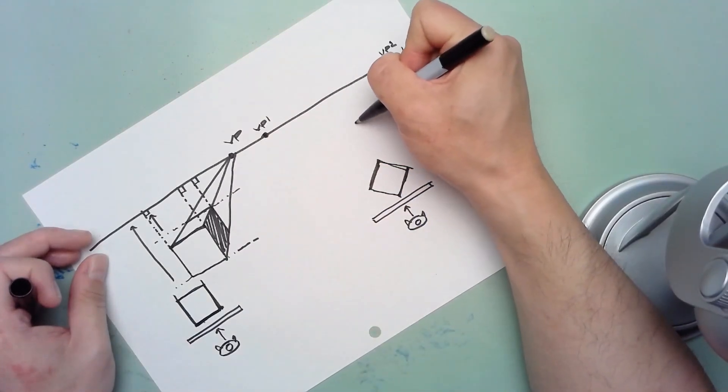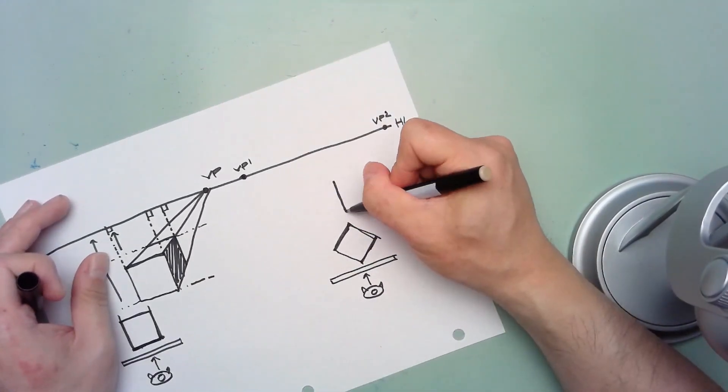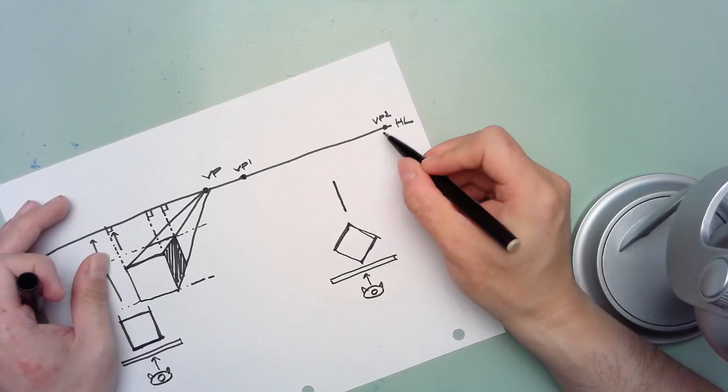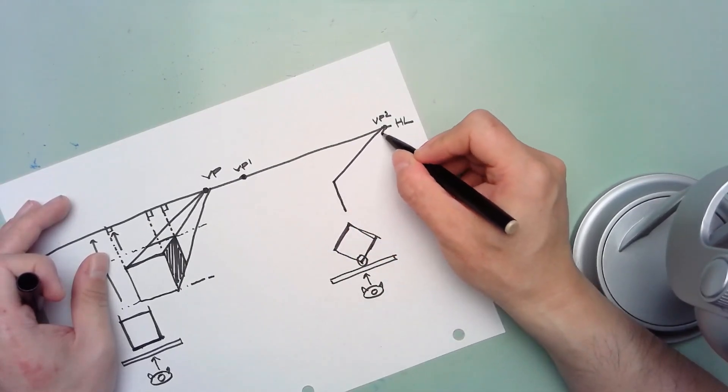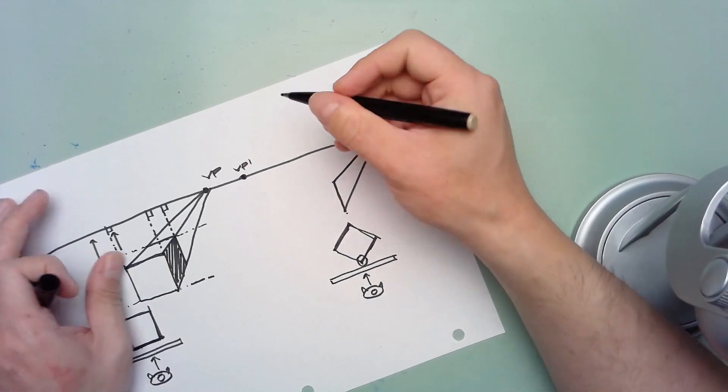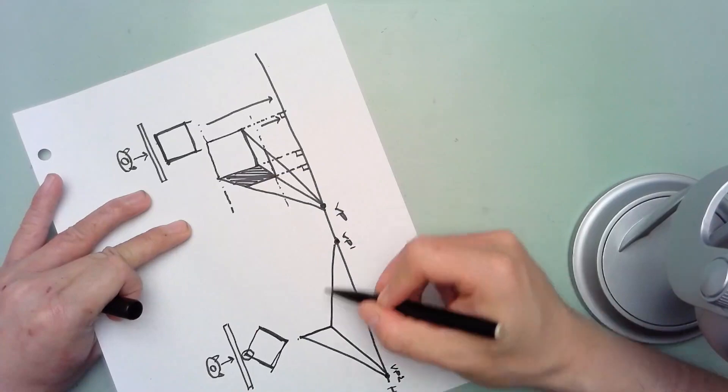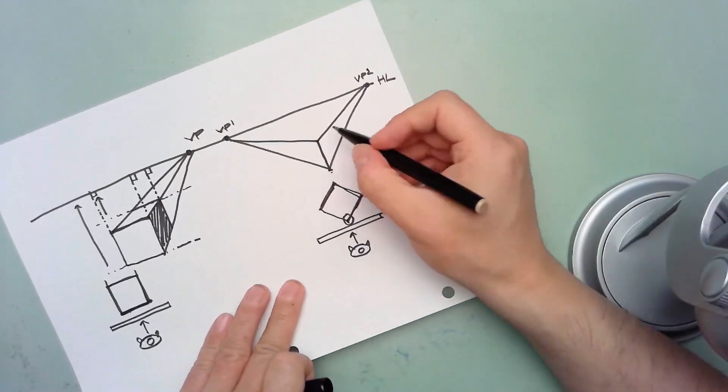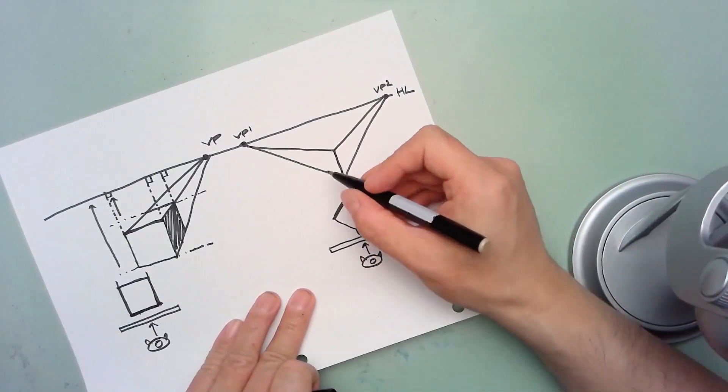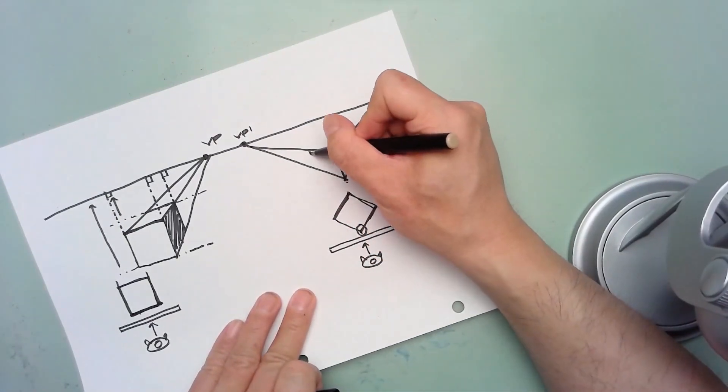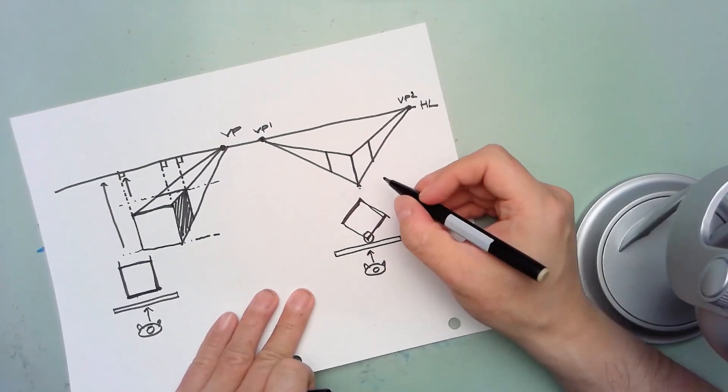That being the case, whenever we draw a two-point perspective cube we will actually draw the edge first, the closest edge, which would be this edge right here. And then all we would do is connect from the top and bottom of this edge to complete essentially the first two sides, here and here, of the cube. So all we need to do is block off the two faces in the front.